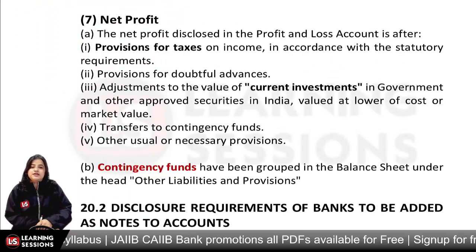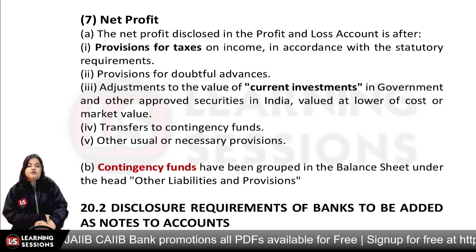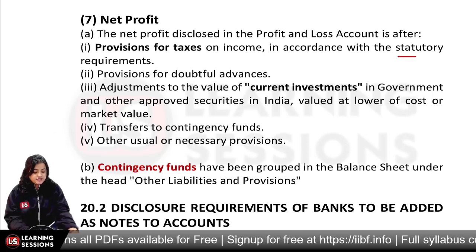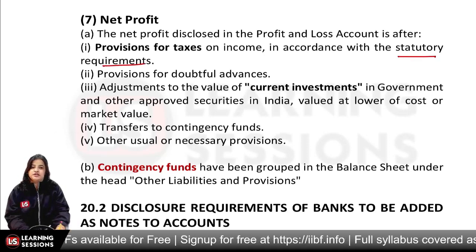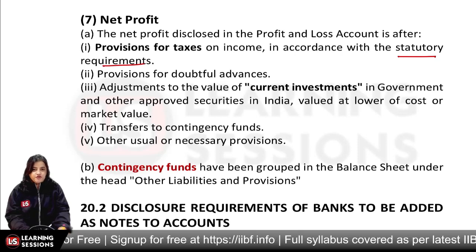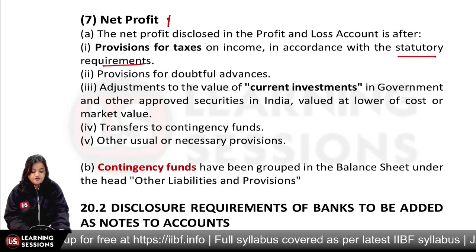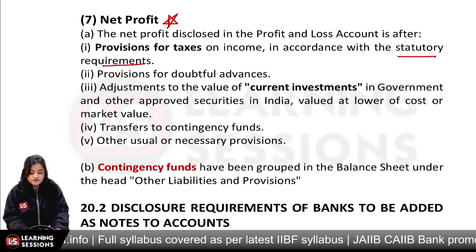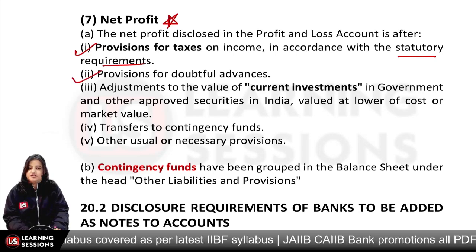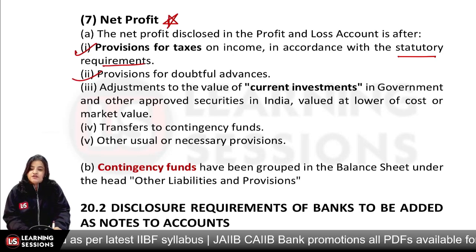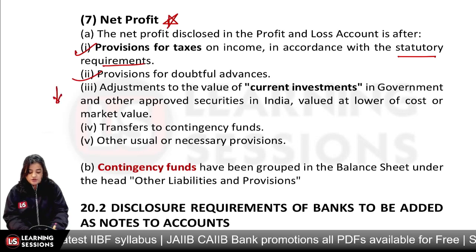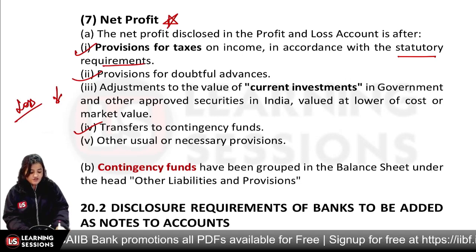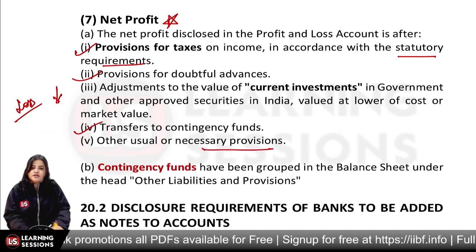After making net profit from profit and loss, we show the provision for income tax under statutory requirements. We show the net profit calculated after minusing provision for taxes, any doubtful advance provisions, and if an asset value depreciated, we minus it. We also transfer an amount to the contingency fund after making net profit.